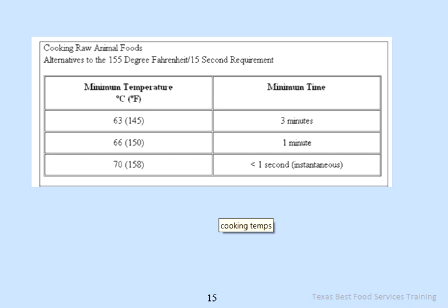This chart shows that the minimum cooking temperature can be adjusted slightly if necessary, but the time duration must change accordingly. If you deviate from the specified temperature for cooking raw animal food, look up this chart to determine what time and temperature must be used.